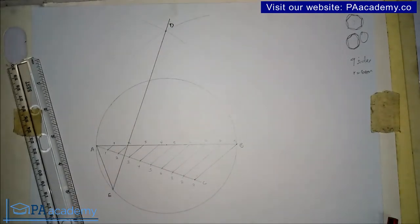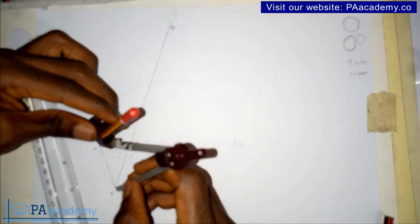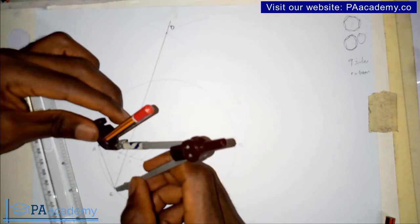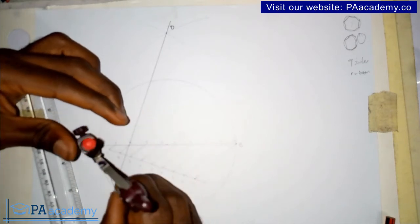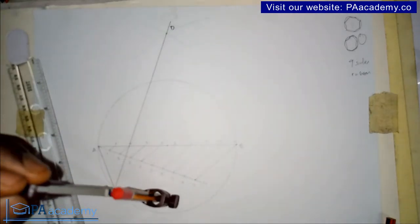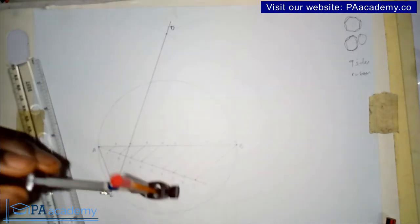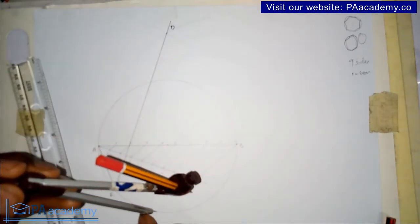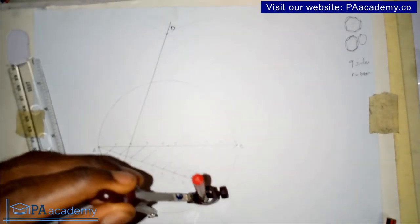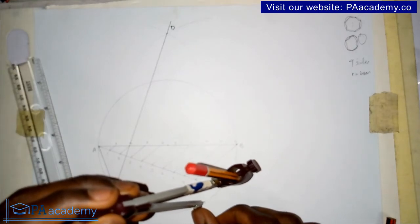Now bring back your compass and measure the length of line AE. This length is the side length of our polygon. Using this measurement, mark it repeatedly around the circumference of the circle. You have to be careful when you are doing this.